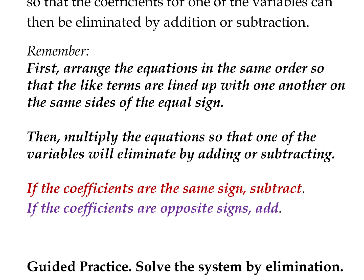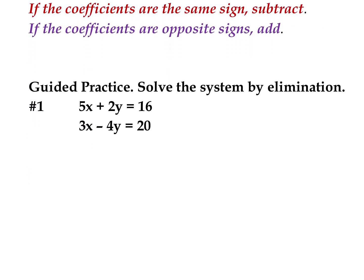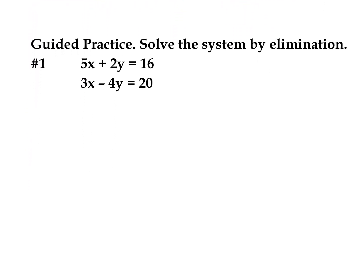Let's see a system of equations where we need to multiply before eliminating a variable. As you can see in this example, if we just add or subtract the equations the way they're written, nothing's going to cancel. 5 plus 3 and 5 minus 3 won't cancel out. 2 plus negative 4 or 2 minus negative 4 also won't cancel out. So if we just add or subtract the way they're written right now, nothing will cancel out.